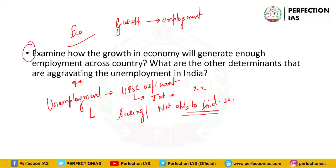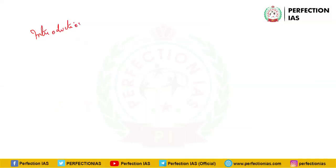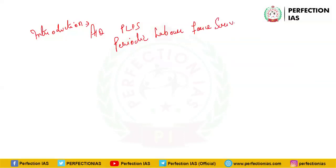Now it should be clear what unemployment means. Like in rest of our answers, sabse pehle introduction ke baare mein — in economics questions, you can start with a fact. According to the PLFS (Periodic Labour Force Survey), which is the latest and authentic data, the unemployment in the country is at a 45-year high — meaning such unemployment has not been seen in the past 45 years.